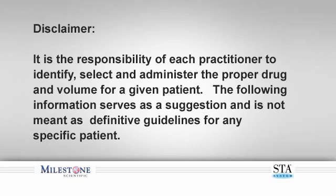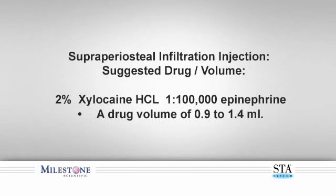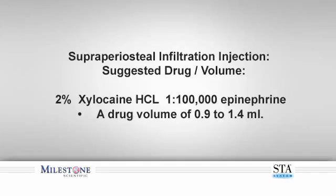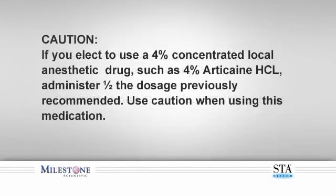The following information serves as a suggestion and not meant as definitive guidelines for any specific patient. The suggested drug and volume to perform the supraperiosteal buccal infiltration injection is 2% xylocaine HCL, one part per 100,000 epinephrine. A drug volume of 0.9 milliliters to 1.4 milliliters, which is equivalent to three quarters to one full cartridge, is the suggested volume when performing this infiltration.